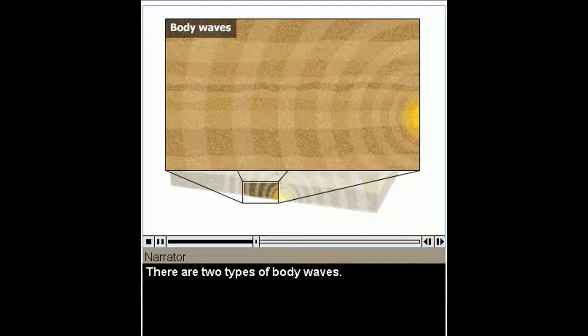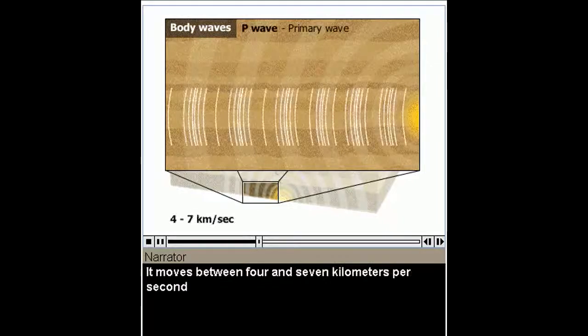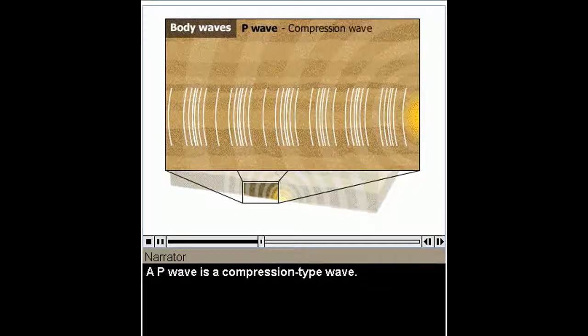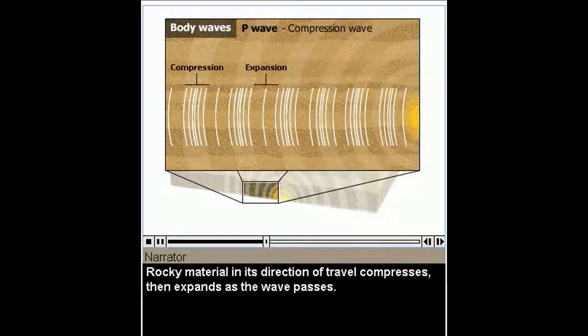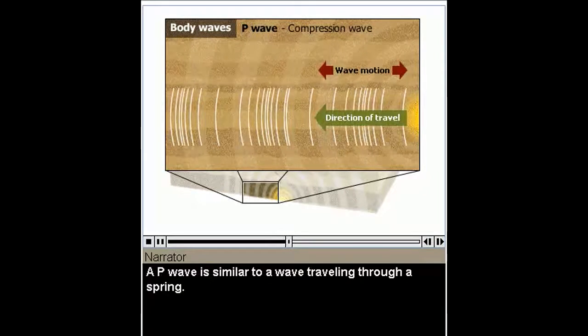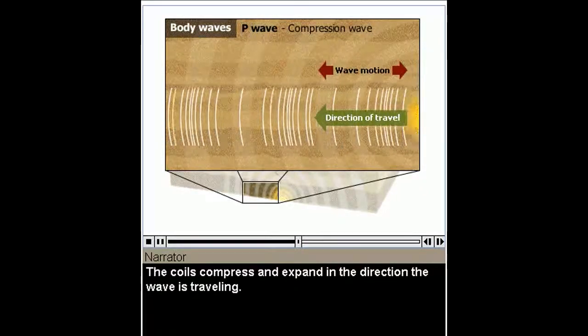There are two types of body waves. The fastest wave is called a P wave, or primary wave. It moves between 4 and 7 kilometers per second depending on the density of the rock it's moving through. A P wave is a compression type wave. Rocky material in its direction of travel compresses, then expands as the wave passes. A P wave is similar to a wave traveling through a spring. The coils compress and expand in the direction the wave is traveling.